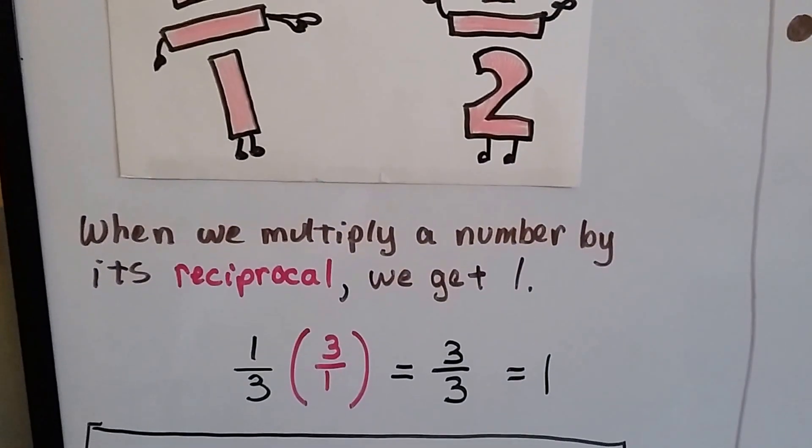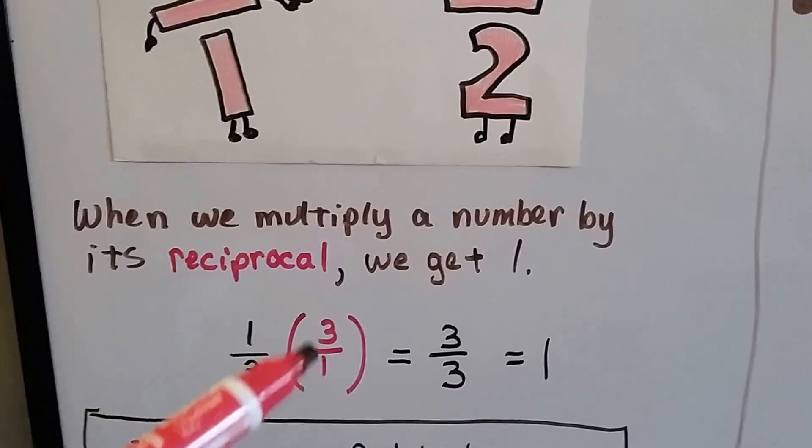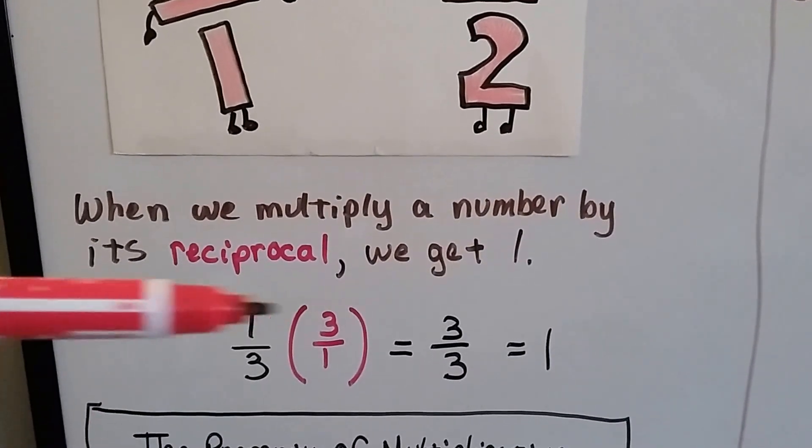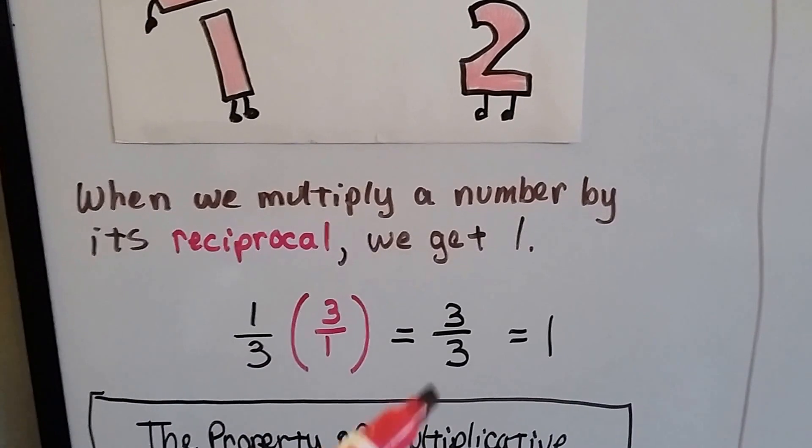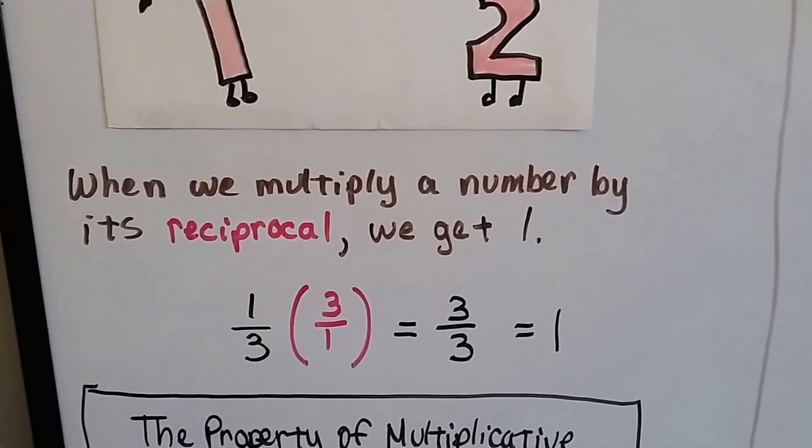When we multiply a number by its reciprocal, we get 1. So, 1 third, if we flip the 1 third around to 3 over 1, we're going to get 3 over 3 as the numerator and denominator. When the numerator and denominator are the same, we get 1.